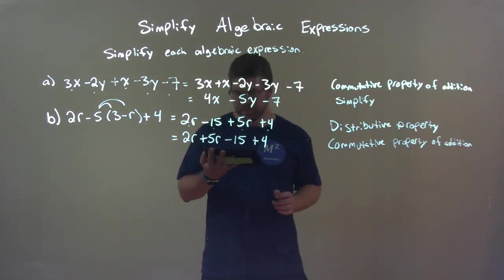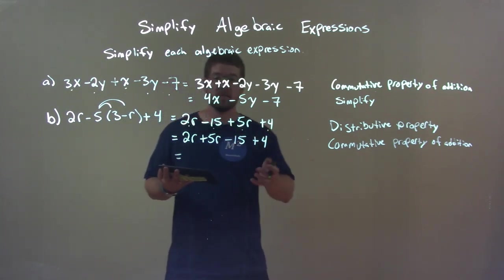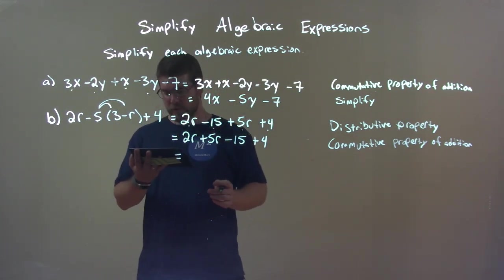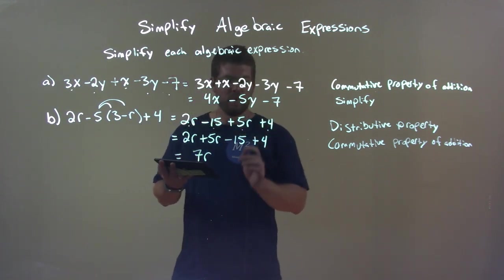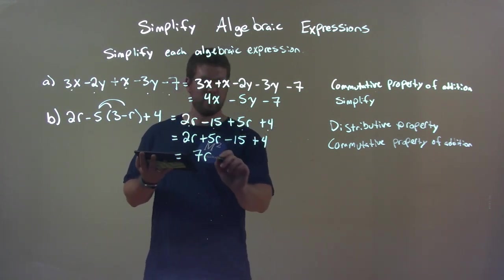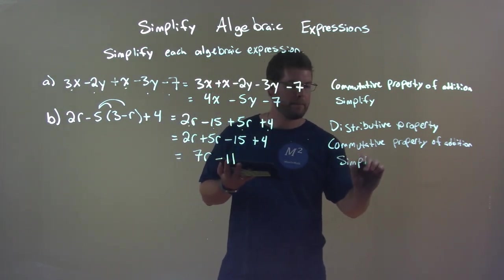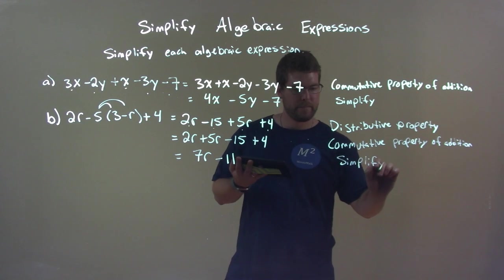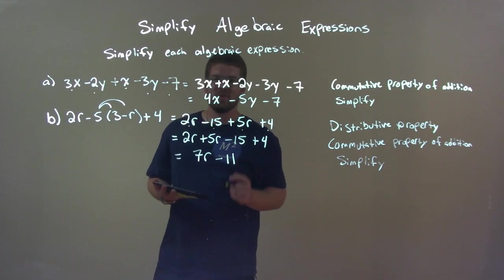Okay? And lastly, we just need to combine our like terms and simplify. 2r plus 5r is a 7r. And then negative 15 plus 4 is a minus 11. And we simplify. Okay? That's it? Okay. So let's do another example.